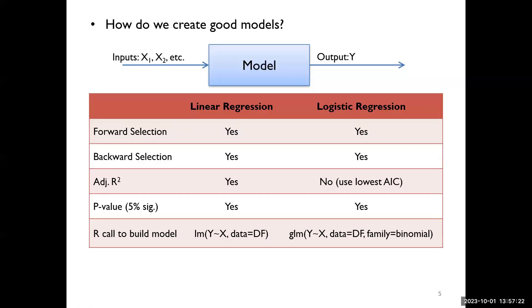We're going to use either forward selection or backward selection. Whether you're building a linear regression or logistic regression model, you can use either method. Forward selection means you add one variable at a time to your model until your stopping criterion is satisfied. Ultimately, the type of model we want is what's called a parsimonious model — that means the fewest number of variables while still having high performance. In forward selection for linear regression, you add one variable at a time until your adjusted R-squared value no longer increases.